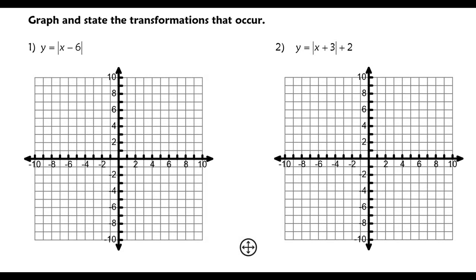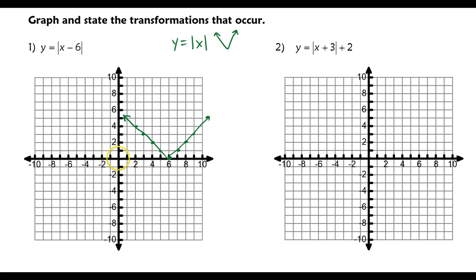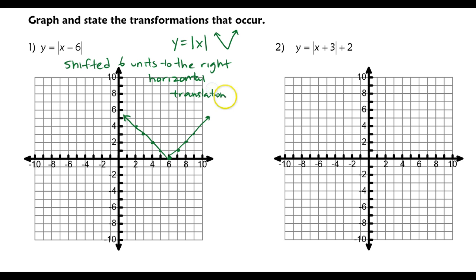In this first graph, if you were to make a table and compare it to the mother function y equals the absolute value of x — remember this is supposed to be a v-shape — if you were to create a table and graph this, you get a shape that looks like this, still a v-shape, but notice how it shifted. Our mother function usually starts at the origin. This has shifted six units to the right, and that's how we would explain the transformation that occurred. We would call that a horizontal translation.